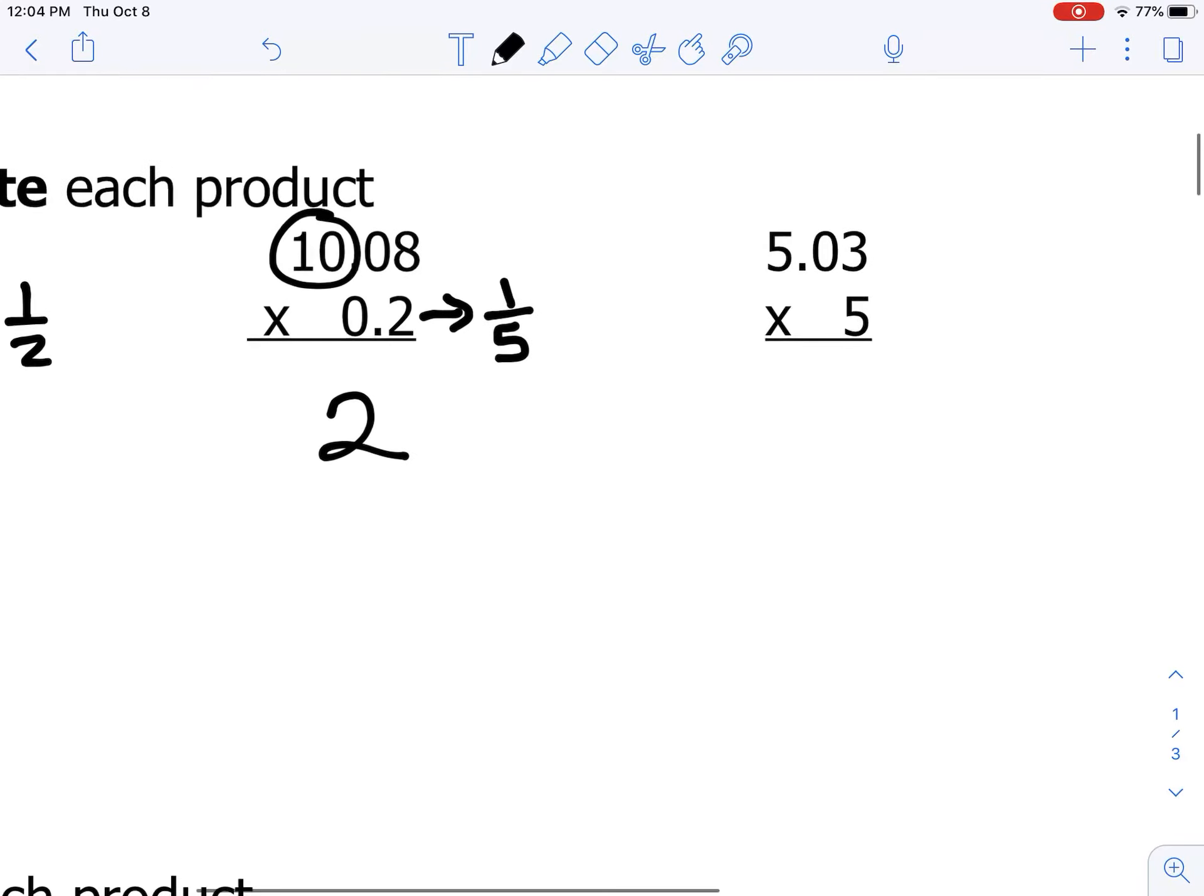Number three, I'm just going to look at the whole numbers here. 5 times 5 gives us 25, so I think the product will be close to 25.